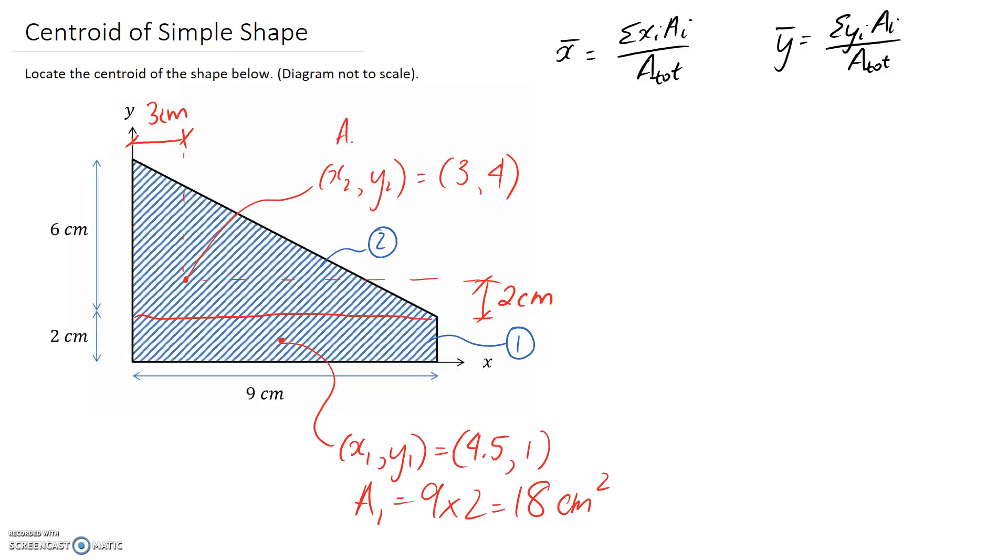For the other one, we have to find the area of the triangle. That's 1/2 times the base of the triangle, which is 9 centimetres, times by its perpendicular height, which is 6. So this one here works out to be 27 centimetres squared.